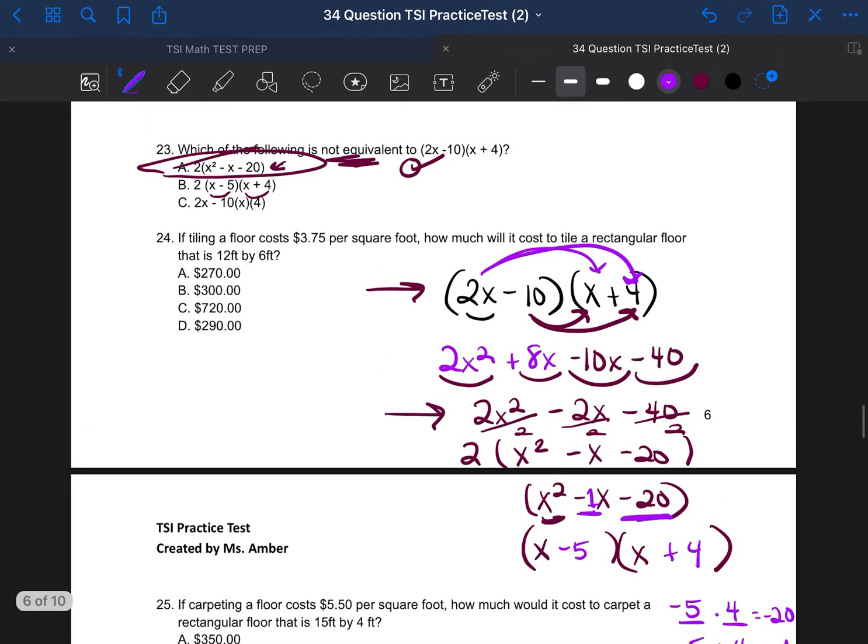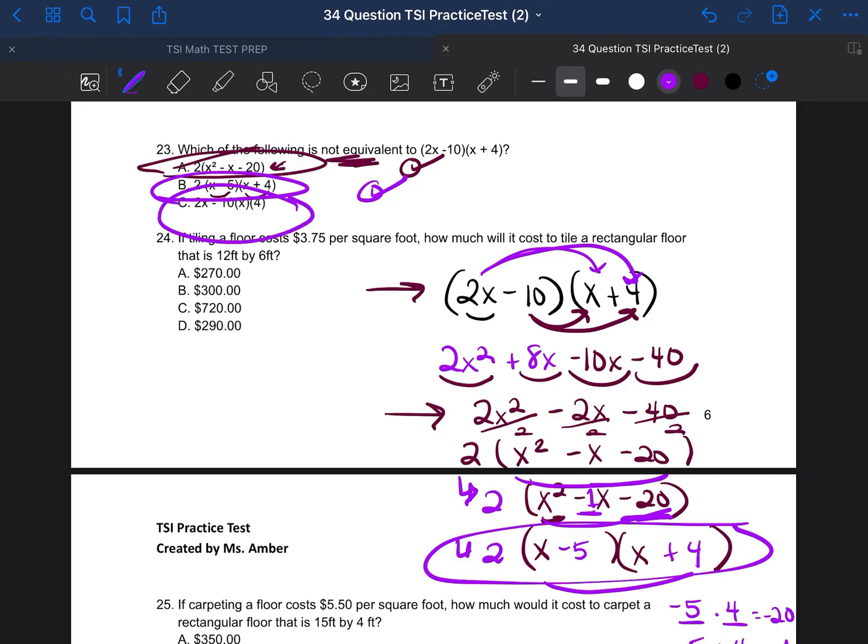So 2 would be on the outside because that 2 is still there. We just broke down the inside. So this is also equivalent. So B is also equivalent. So it must mean that this last piece is going to be the answer. Since these two were equivalent, this must be the one that's not equivalent.